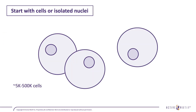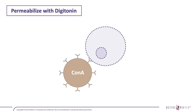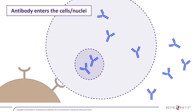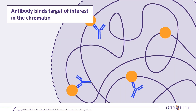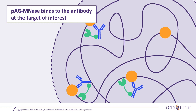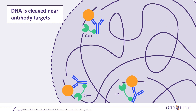Here's how CUT&RUN works. You start with cells or isolated nuclei — from as few as 5,000 up to 500,000 — which are bound to ConA beads. Samples are permeabilized with digitonin and antibodies to your target are introduced. The antibodies cross the permeabilized membranes into the nucleus where they associate with your target. The PAG-MNase is then added; the fusion protein binds to the antibodies bound to the target in the chromatin, and nuclease activity is activated by the addition of calcium ions.